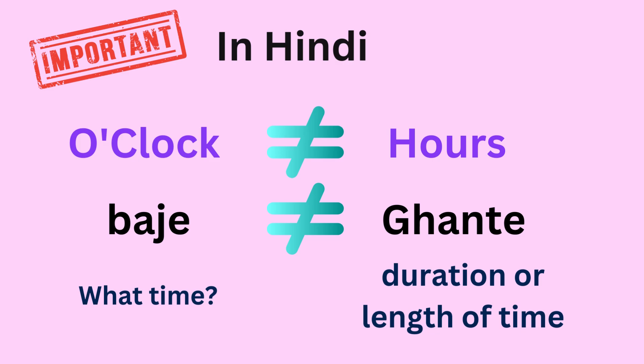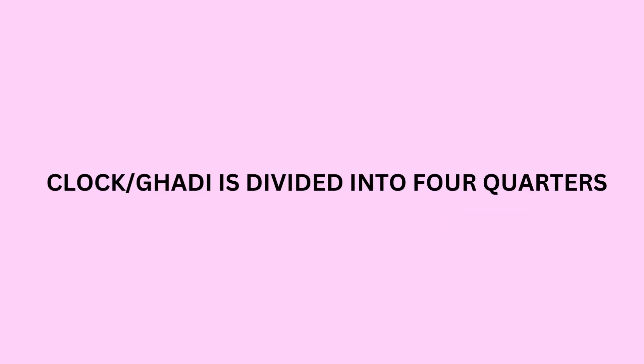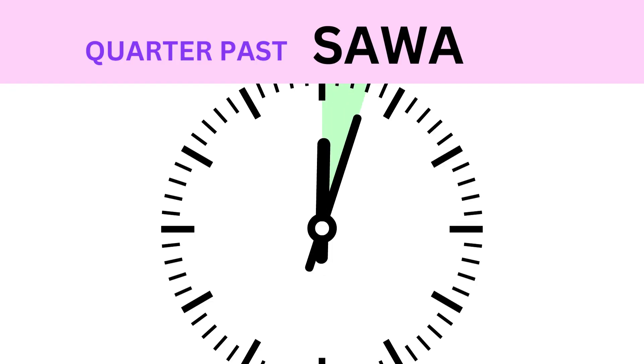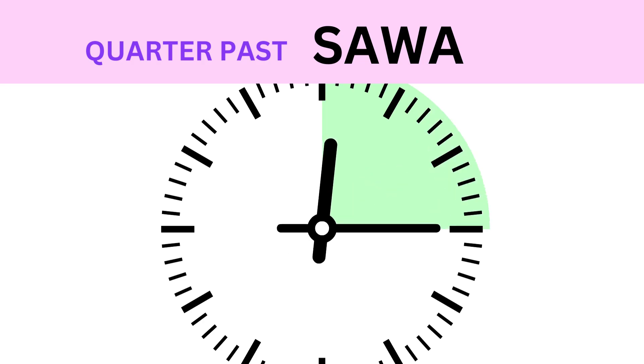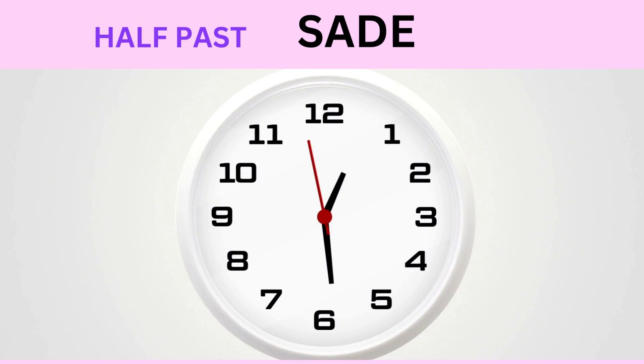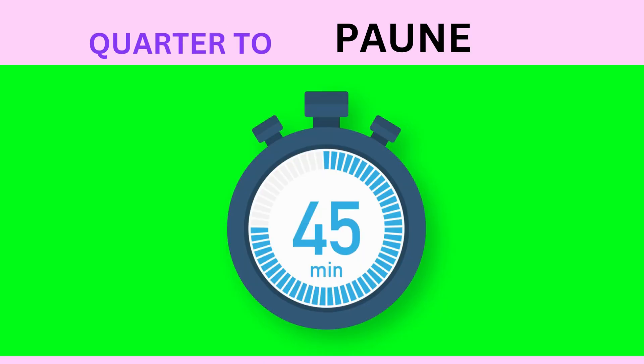Baje tells you what time it is right now — you can simply ask kitne baje hain? meaning 'what time is it?' And ghante tells us the duration — how long was your journey? Kitne ghante ki yatri thi aapki? Now, a clock can also be divided into four quarters. Quarter past is known as sava, half past is known as saade, and quarter to is known as paune.